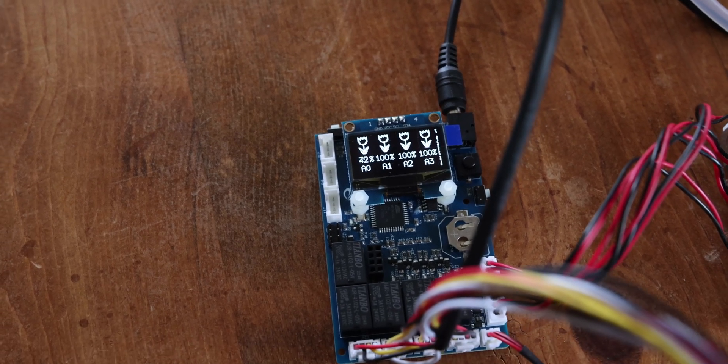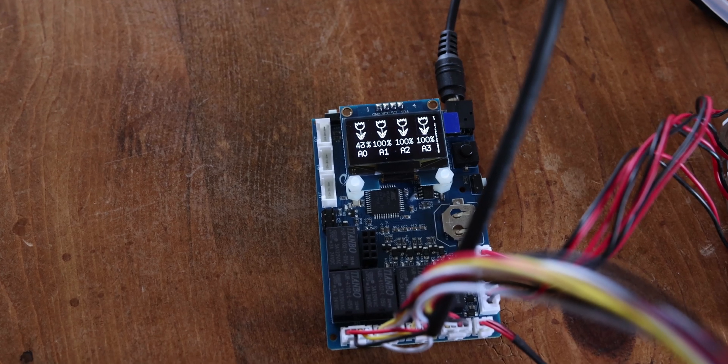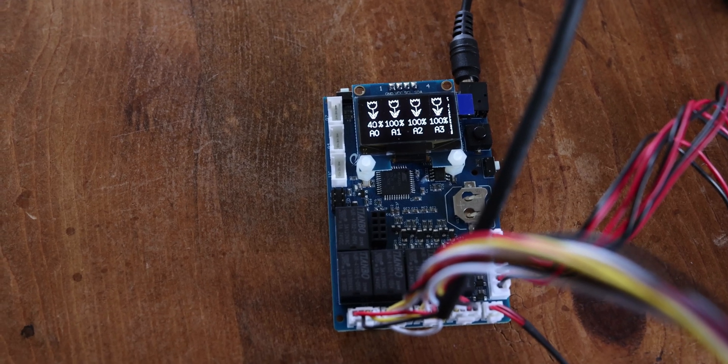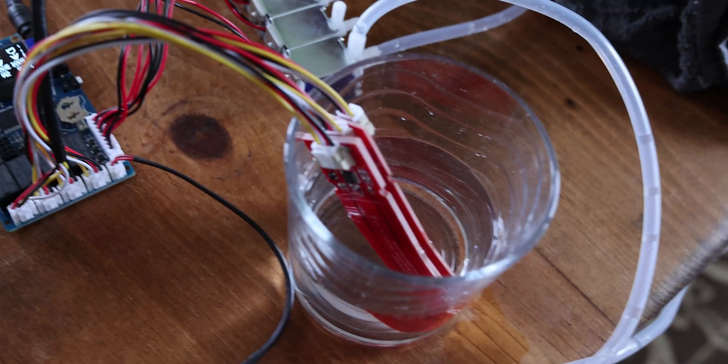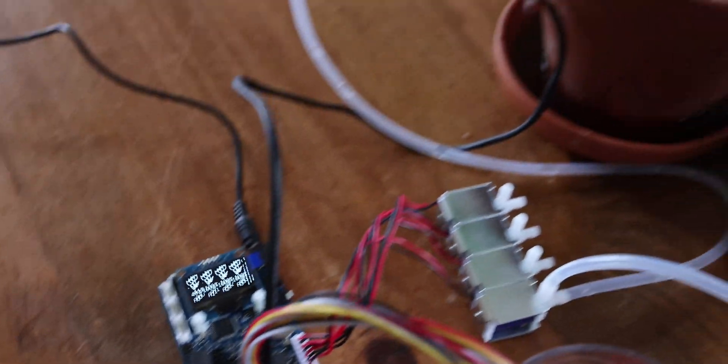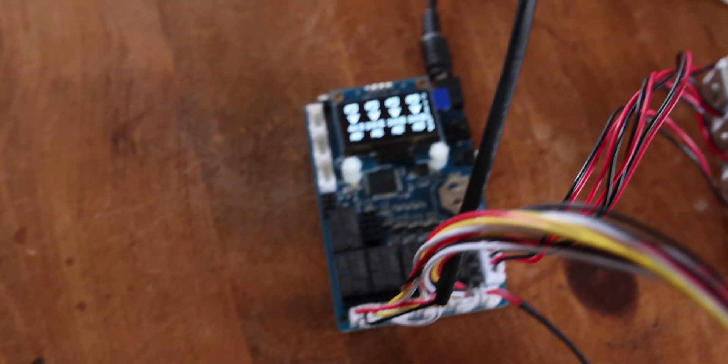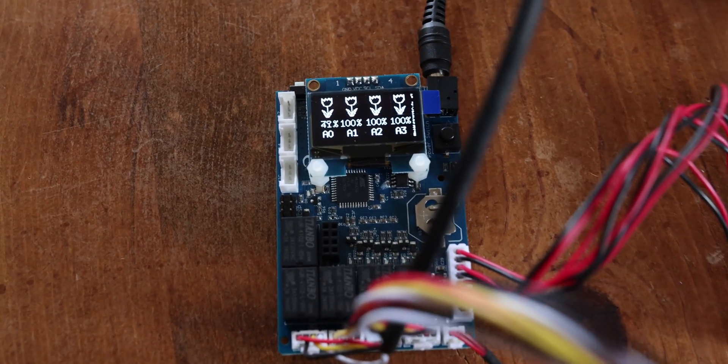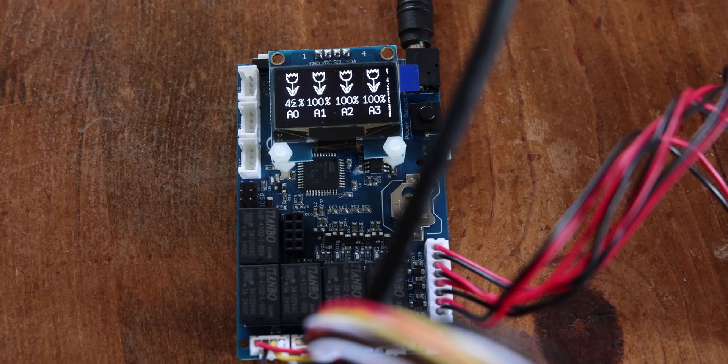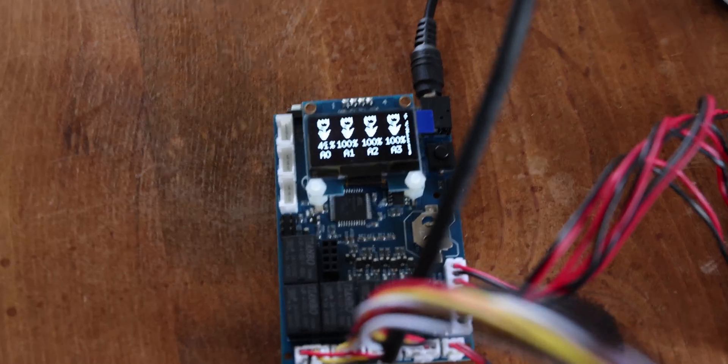Here's a close-up on the shield, the Arduino board that's controlling the system. You can see that it displays the moisture level of all four sensors. Three of the sensors are in water so they're displaying 100 percent, while the fourth one in the plant is displaying 42 percent. You get a sense of the moisture level.